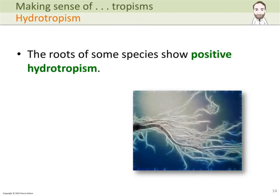Some species of plants also show another type of tropism called hydrotropism, which is a growth response to water. The roots of the plants want to get as much water as possible, and they grow towards it.